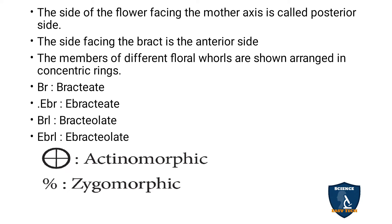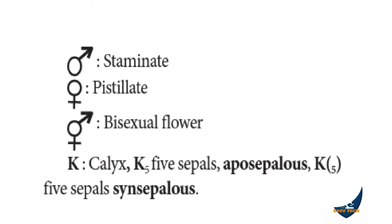The asterisk symbol represents actinomorphic, and the percentage symbol represents zygomorphic. Actinomorphic means the flower can be cut at any plane to give two equal halves, while zygomorphic means it can only be cut at one plane to give two equal halves. The arrow-up symbol represents staminate or male flower, the arrow-down symbol represents pistillate flower, and the combined symbol represents a bisexual flower.